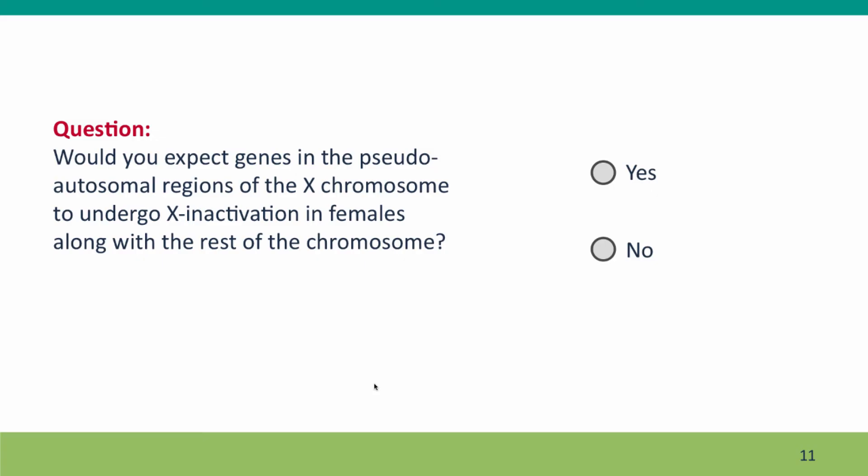Here's a question: would you expect genes in the pseudo-autosomal region of the X chromosome to undergo X inactivation when they're in females, along with the rest of the X chromosome? The answer is no. The reason that the rest of the X chromosome needs to undergo inactivation is because males have only one copy of those genes. But for the pseudo-autosomal genes, both males and females have two copies, so no inactivation is needed — no dosage compensation is needed.